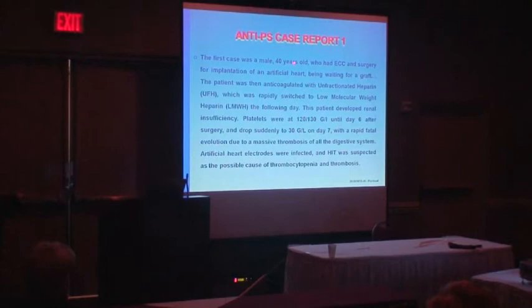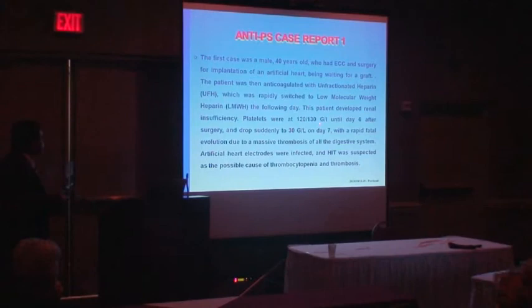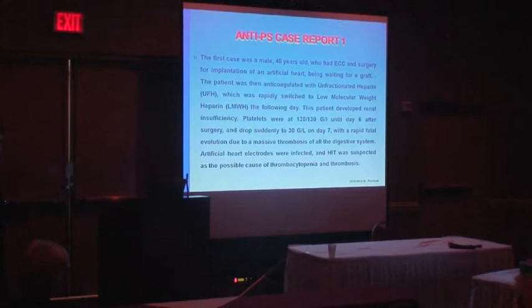The first case was a 40-year-old male who had extracorporeal circulation and surgery for implantation of an artificial heart while waiting for a heart graft. He was anticoagulated with unfractionated heparin during cardiopulmonary bypass, then switched to low molecular weight heparin. He developed renal insufficiency and platelets remained above 100 giga per liter until D6, then dropped suddenly to 30 giga per liter on D7, with rapid fatal evolution due to massive thrombosis of the digestive system.